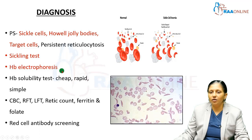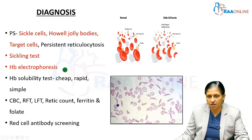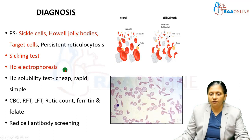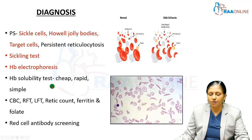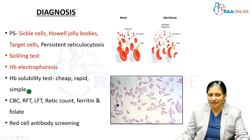Confirmatory diagnosis of sickle cell anemia is made by hemoglobin electrophoresis, which confirms the presence of hemoglobin S. We also do a hemoglobin solubility test, which is a cheap, rapid, and simple test used in low-resource settings.